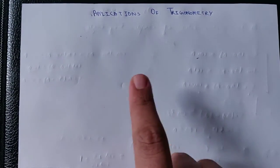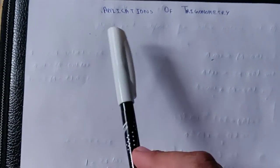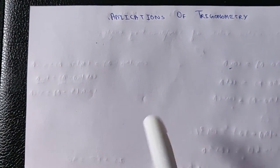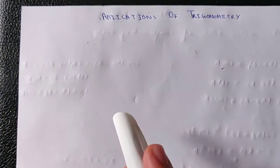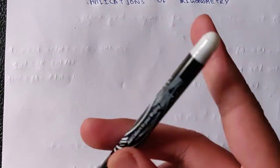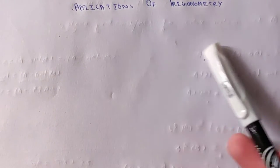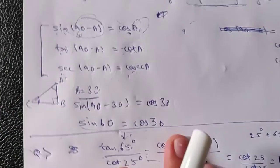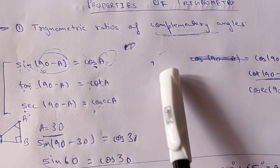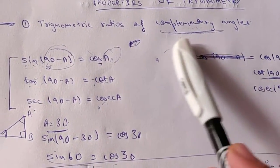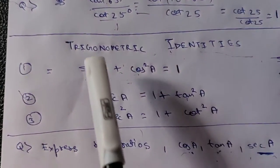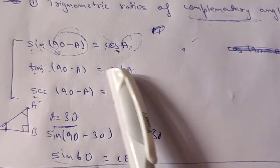Hello guys, today we will learn about applications of trigonometry. These are the things for which we learned the last chapter — we wanted to understand it because we wanted to apply trigonometry. Before starting, let me give a quick review of what I taught in the previous lecture. I covered two things: complementary angle properties and trigonometric identities.